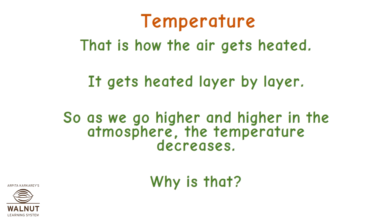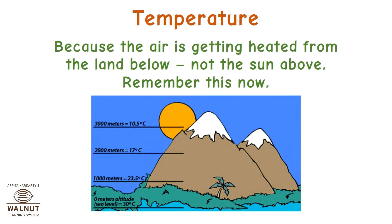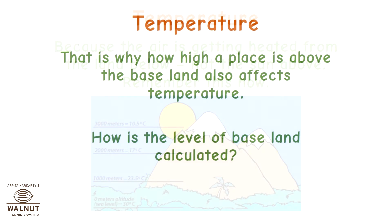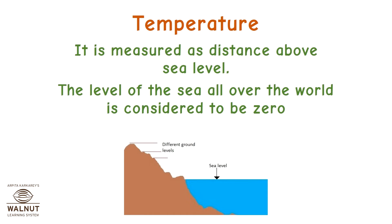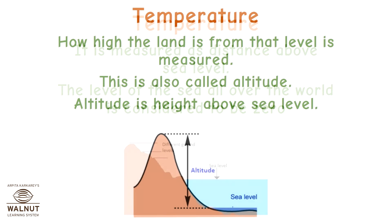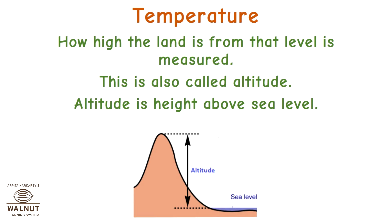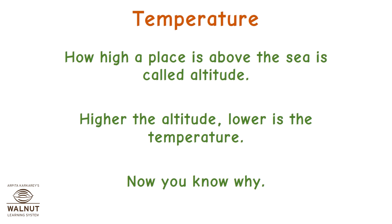Why does temperature decrease with height? Because the air is getting heated from the land below, not the sun above. Remember this. That is why how high a place is above the base land also affects temperature. This is measured as distance above sea level — the level of the sea all over the world is considered to be zero. How high the land is from that level is called altitude. Higher the altitude, lower is the temperature.